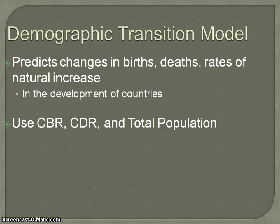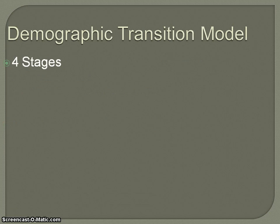When we look at the Demographic Transition Model, we're going to be using the elements of crude birth rate, crude death rate, their relationship to each other, and how that's going to impact total population. There are traditionally four stages within the Demographic Transition Model, and they're all characterized by certain rates of growth.